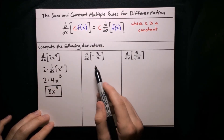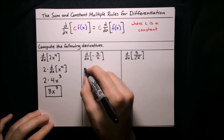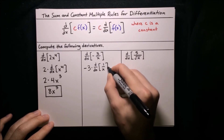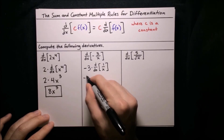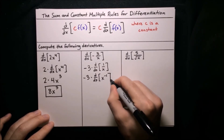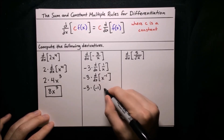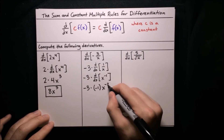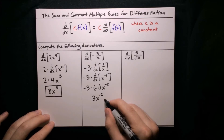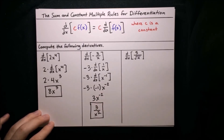Next, the derivative of negative 3 over x. First, pull out that constant — we have a 3 and a negative sign, so pull out negative 3: negative 3 times the derivative of 1 over x. Write 1 over x as x to the negative 1 so we can apply the power rule. So negative 3 times: bring down that power, negative 1 times x, decrease that power by 1 to get negative 2. Negative 3 times negative 1 makes positive 3, so 3x to the negative 2, which is 3 over x squared. That's our derivative.